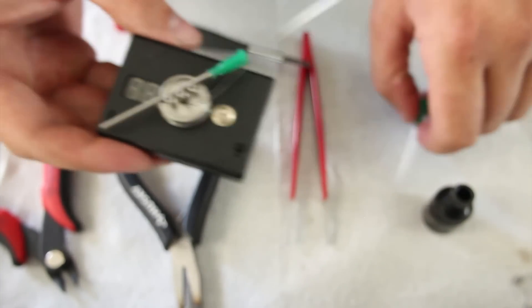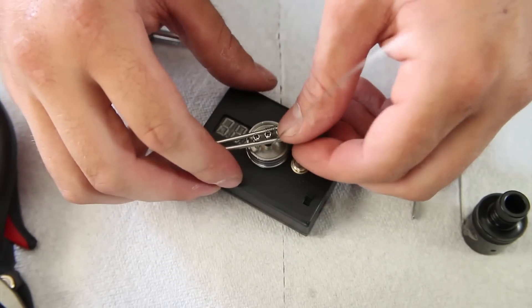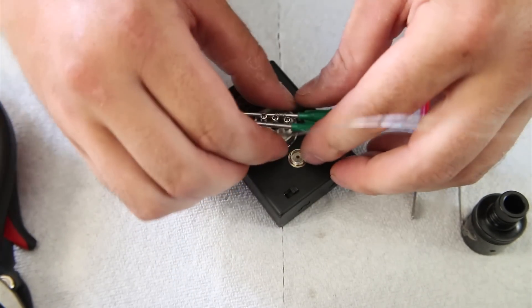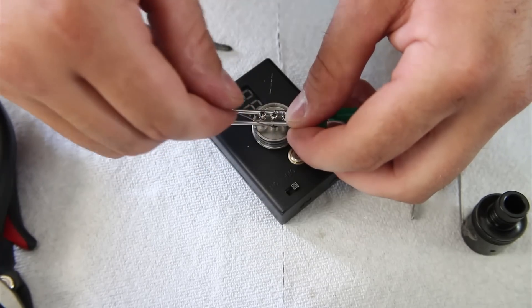Okay, so now you want to take your second syringe needle and place it right where you want your coil on the other side. And you're going to start wrapping.